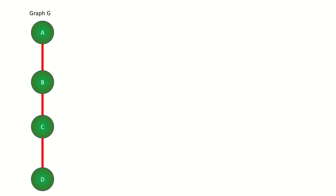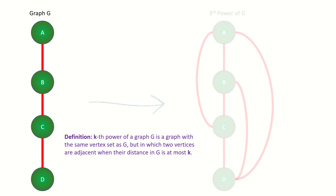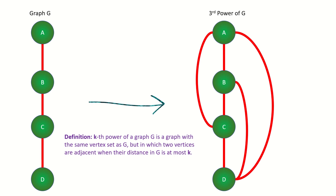To recap, the kth graph power is an operation on graphs that takes as its input some undirected graph, and outputs a new undirected graph with the same vertex set as the original one, but in which two vertices are adjacent if their distance is at most k in the original graph.